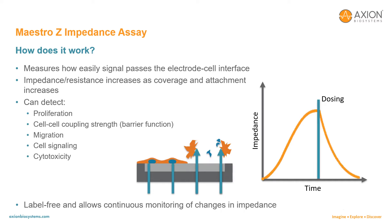If a perturbation causes cells to die or detach, the impedance decreases. The impedance assay has proven suitable to study cell proliferation and differentiation, strength of cell-to-cell coupling, cell migration, cell signaling, cytotoxicity of chemotherapy agents, and efficacy of cell therapies. Because the impedance measurement is non-invasive and label-free, the dynamics of the changes can be continuously monitored in real time over minutes, hours, or days without disturbing the underlying biology.